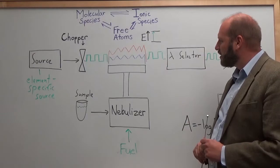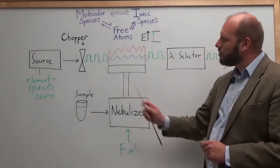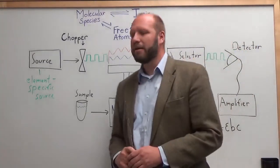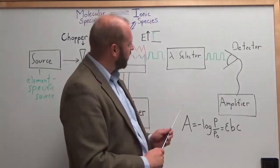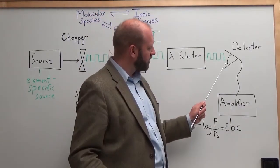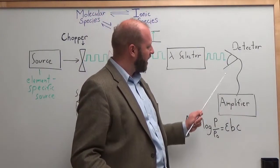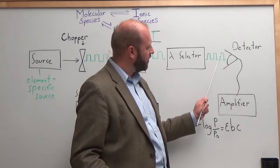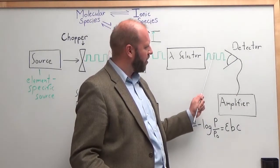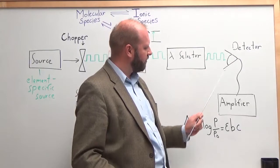We then put this through a wavelength selector where we just want to measure the one specific wavelength of light from our source element. This then goes through a detector where we can amplify it and deconvolve it to figure out what came from our lamp versus what came from the flame.